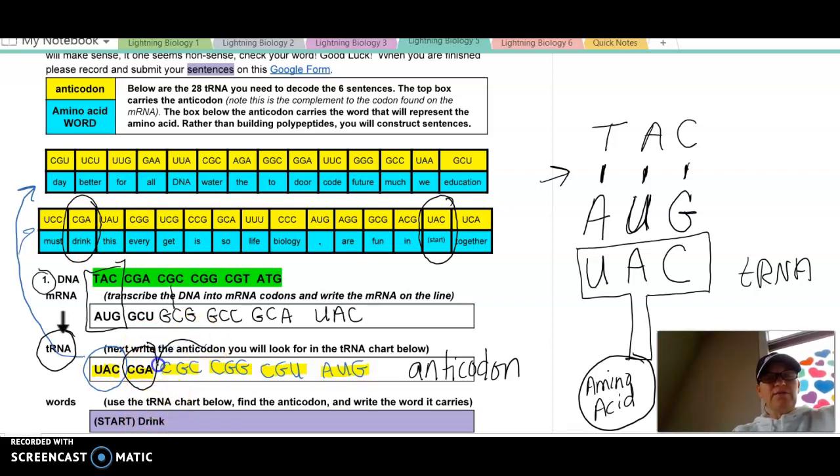The next one I'm going to do, the next anticodon is CGC. So I'm going to come up here. And I'm going to look for, I'm going to go through and look for, oh, right here. CGC. The word below it is water. So I'll come down here and I will write the word water. If I go to the next anticodon, it's CGG. I come up here. I'm looking for CGG. Oh, right here. Find it. It's kind of like a little hide and go seek. I find CGG. The word is every. And so I'll write the word every.